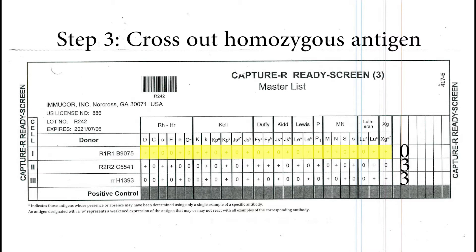Step 3: cross out homozygous antigens. The first antigen is D antigen — it shows a positive sign, meaning this donor has D antigen present on the RBC. There is no little d shown, so D is homozygous and can be used to cross out. Antigen C is also homozygous because big C is positive and little c is negative, so you can rule out big C. For E antigen, big E is negative and little e is homozygous, so you can rule out little e as a possible antibody.